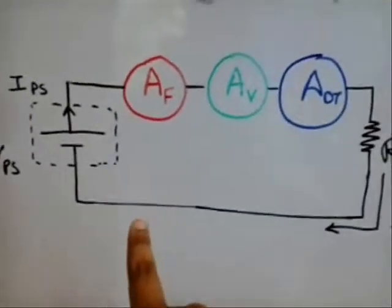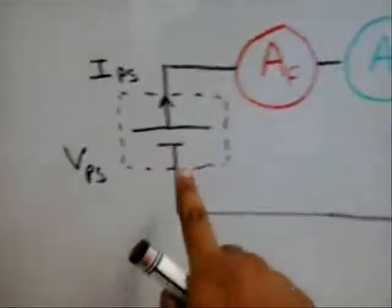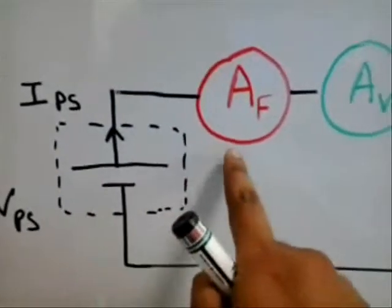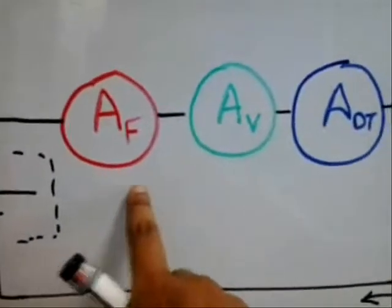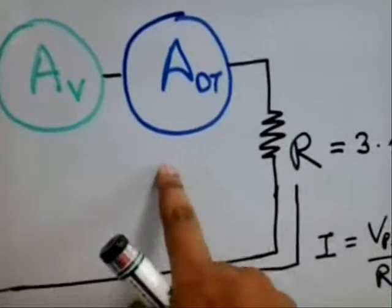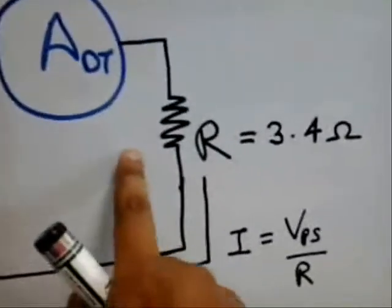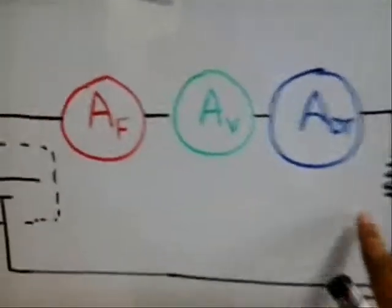So this is the simple circuit we have wired. This is the Agilent power supply and then we have connected 3 ammeters in series, and then the 3.4 ohms resistance here.